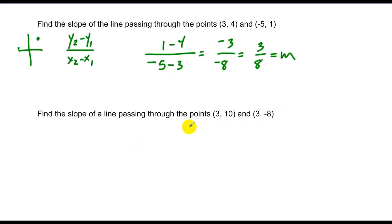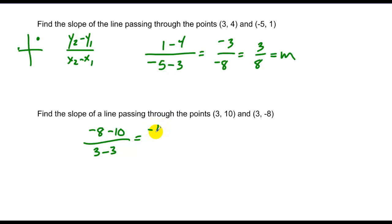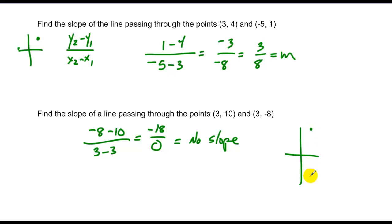We can do the same in the next case. We take the second y-coordinate, negative 8, minus 10, over the x-coordinates, 3 minus 3. In this case we get negative 18 over 0. We can't divide by 0, so we say this has no slope. If you were to graph these — here's (3, 10) and (3, –8) — connect the dots: vertical line. Makes sense.